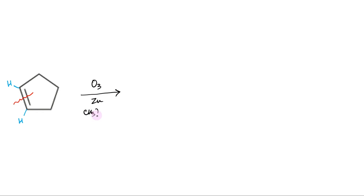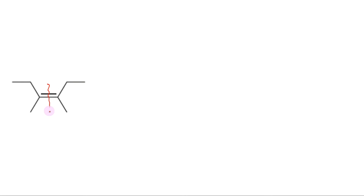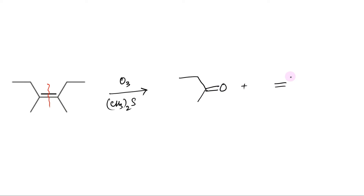Consider cyclopentene as the second example. The double bond can be erased and oxygen added to both carbons. Since hydrogens are present on both double-bonded carbons, aldehyde will be formed on both sides. In the third example, both double-bonded carbons have alkyl groups attached and no hydrogens; therefore, both will be oxidized into ketones.